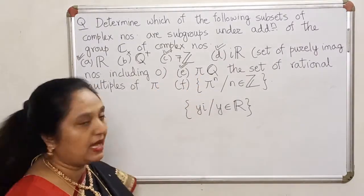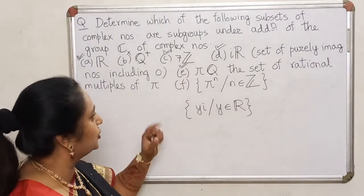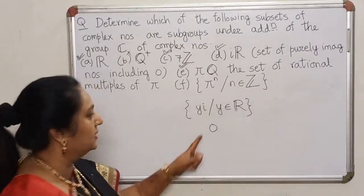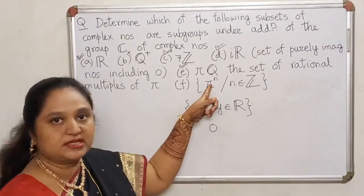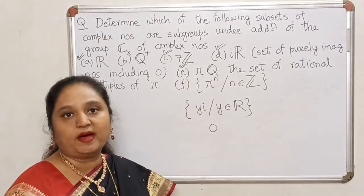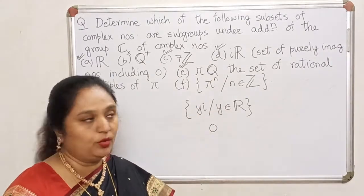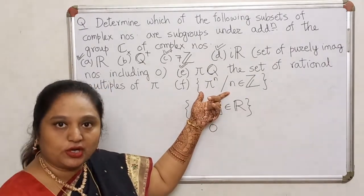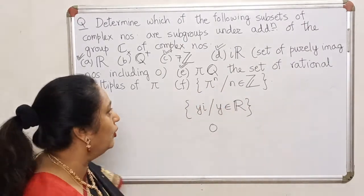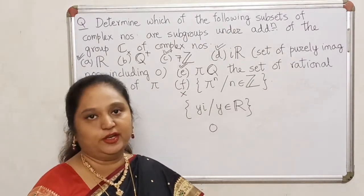However, look at the last example. Remember the identity for addition is 0, and there is no way 0 can belong to this set, because this set contains all integral powers of π, and π raised to something is never going to become 0. So because this set does not contain 0, it will never become a group with respect to addition, and therefore this set is not a subgroup of the given group.